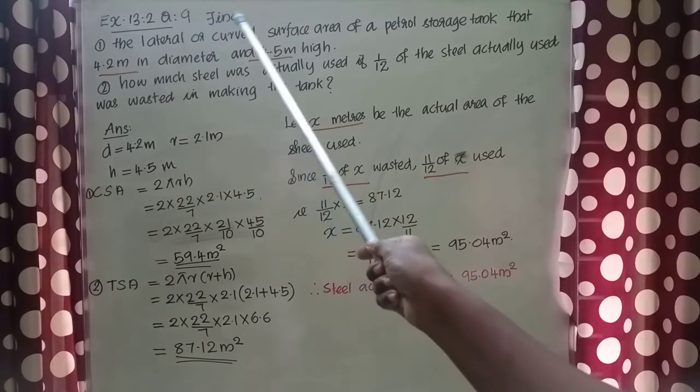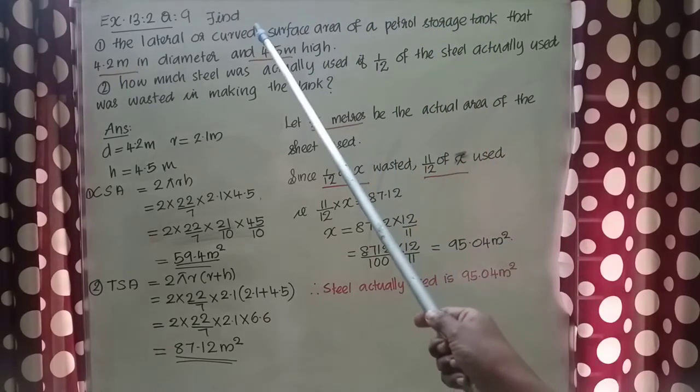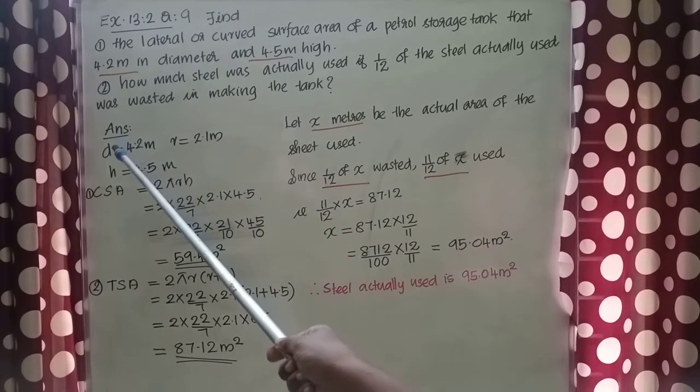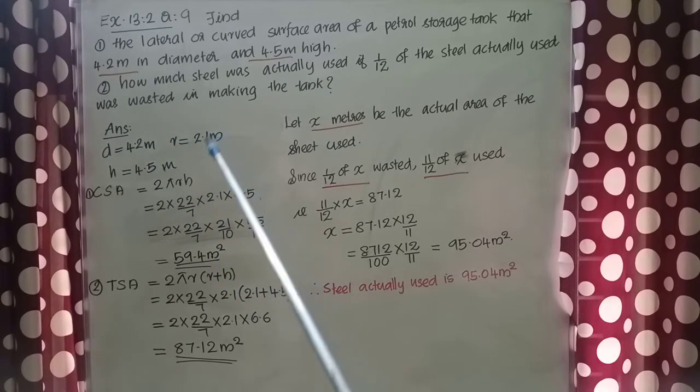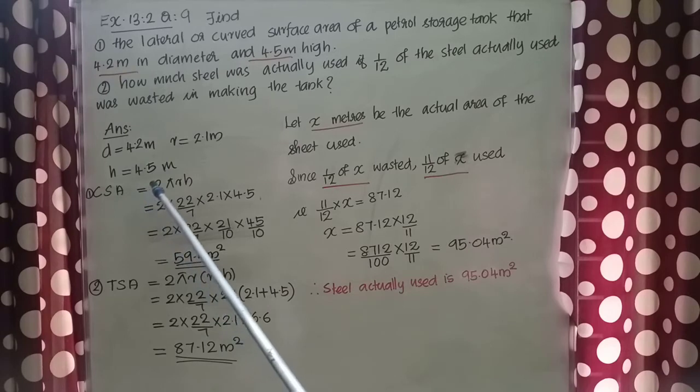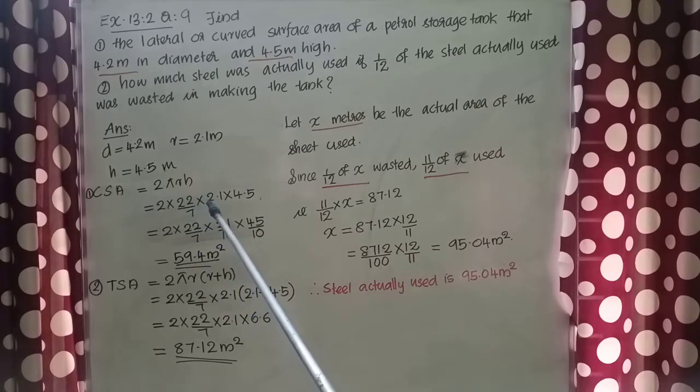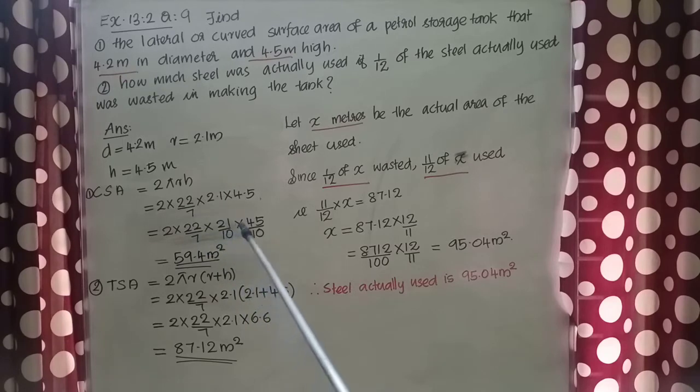The first question is to find the curved surface area of the petrol storage tank which is the shape of cylinder. Here given D equal to 4.2 meter, radius equal to 2.1 meter, height equal to 4.5 meter. CS equal to 2 pi RH. That is equal to 2 into 22 by 7 into 2.1 into 4.5. That is equal to 2 into 22 by 7 into 21 by 10 into 45 by 10. That is equal to 59.4 meter square.